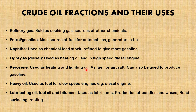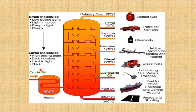Kerosene is used as a heating and lighting oil, as fuel for aircraft, and can also be used to produce gasoline. Heavy oil is used as fuel for slow-speed engines. Lubricating oil, fuel oil, and bitumen are used as lubricants, in the production of candles and wax, road surfacing, and roofing respectively.